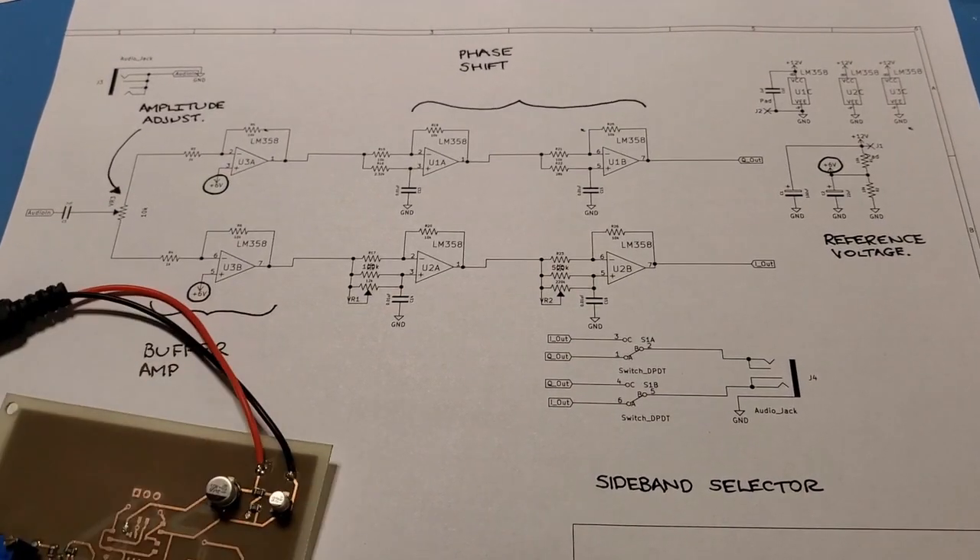Here's the board, partially populated at the moment. Let me zoom in and highlight some sections. Here's the input signal, this is the amplitude adjust pot, here's the buffer amplifier (an LM358 dual op amp), here's the phase shift network, and here's the reference voltage source. I'll populate the rest of this board and we'll come back to test it.